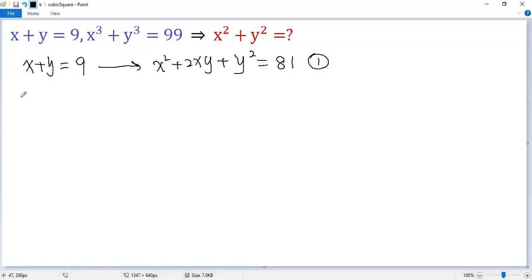From the second condition, x cubed plus y cubed equals 99. We apply the sum of cubes formula, so we get x plus y times x squared minus xy plus y squared equals 99. But we know x plus y equals 9. Plug in.